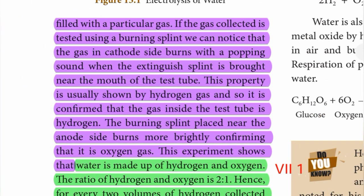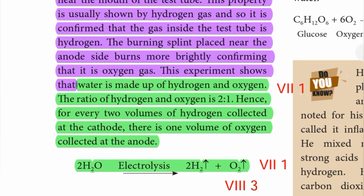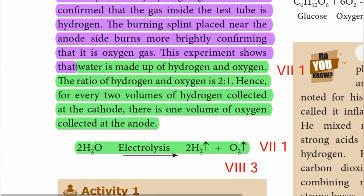If the gas collected is tested using a burning splint, the gas at the cathode burns with a popping sound when an extinguished splint is brought near the mouth of the test tube — this property is shown by hydrogen gas, confirming it is hydrogen. The burning splint placed near the anode burns more brightly, confirming it is oxygen gas. This experiment shows water is made up of hydrogen and oxygen in a ratio of 2:1. Hence for every two volumes of hydrogen at the cathode there is one volume of oxygen at the anode. Equation: 2H₂O → 2H₂ + O₂.